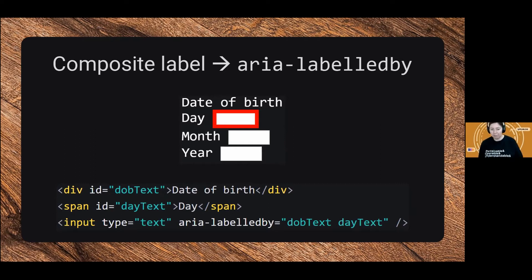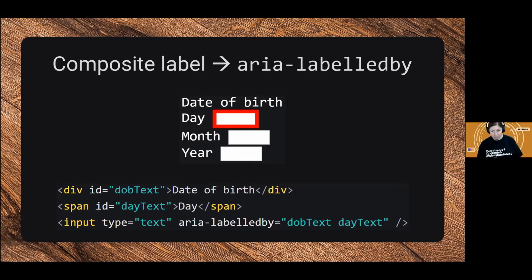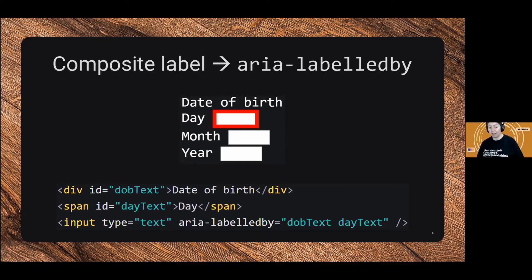ARIA labelledby will line up all of these IDs and just announce them all in a row. So it will literally say 'date of birth, day, edit text, type in' — and off you go, start typing. So if you want to compose a label of multiple strings, ARIA labelledby is a really good way to do it.